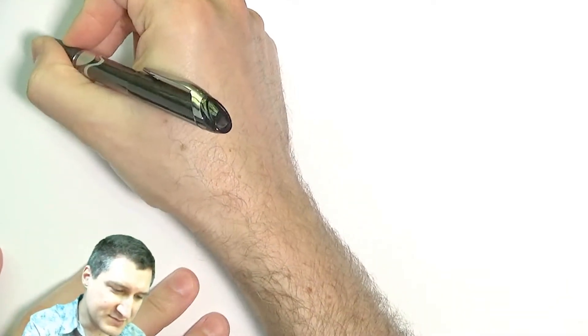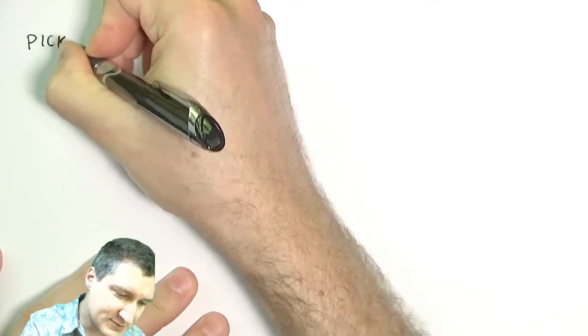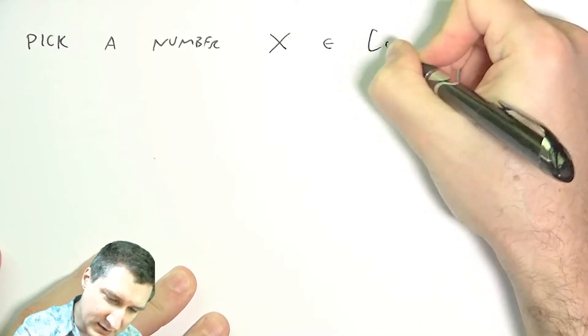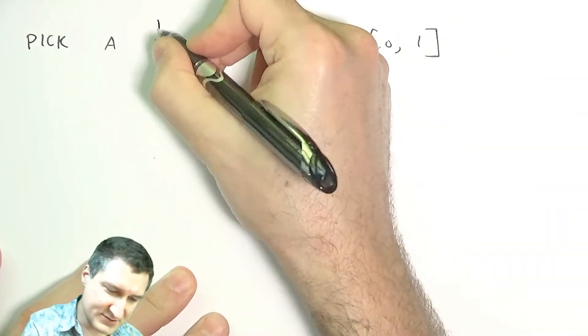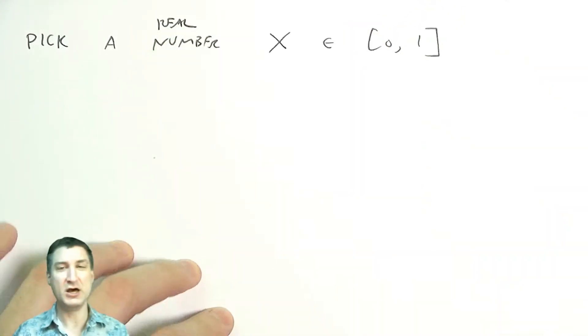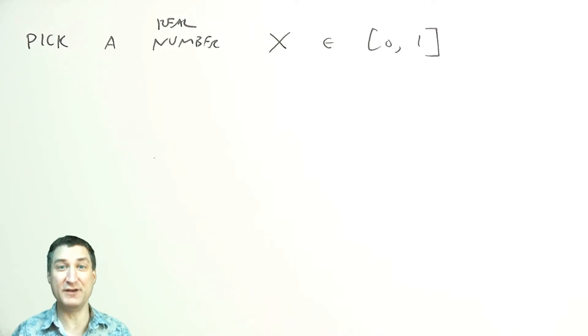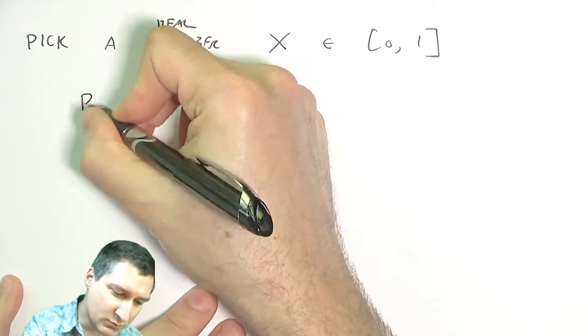We previously talked about when you roll a fair die and you have a discrete set of outcomes one through six, the probability of each of those outcomes is one-sixth. We're also interested in talking about continuous sample spaces, where things are a little bit different. For example, suppose we say pick a number X in zero to one — this is some real number, so it could be one-third or pi over four. We have an infinite number of possibilities.